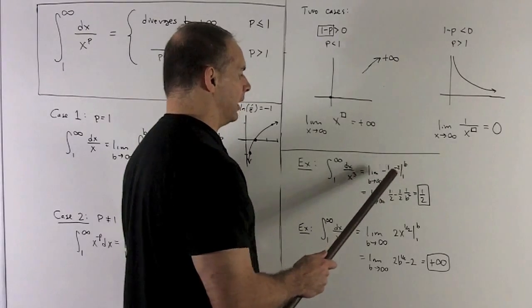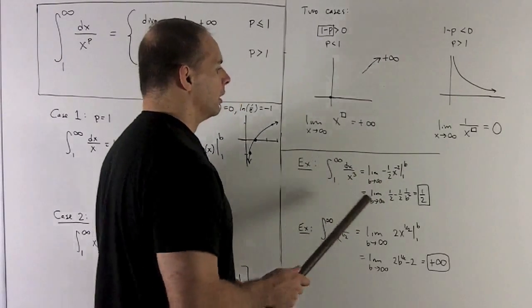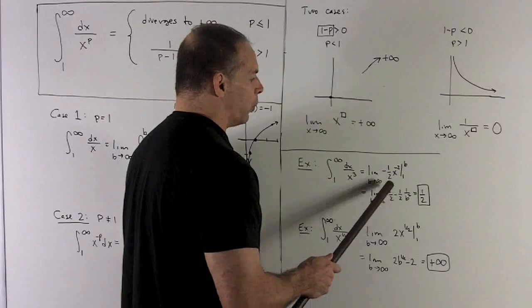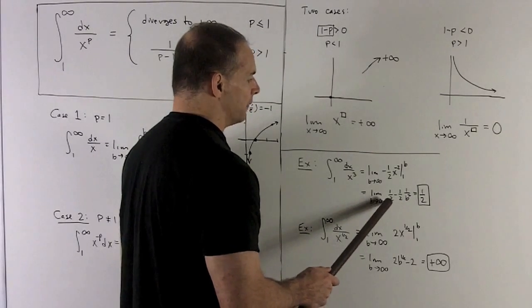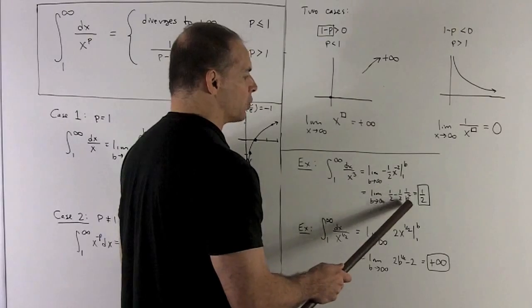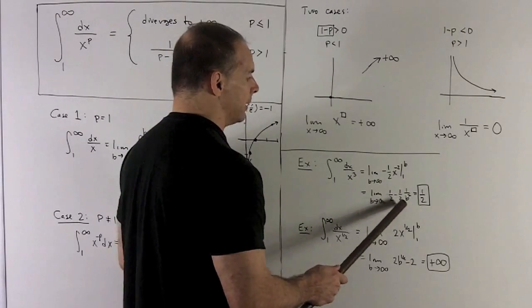And then we're going to go from 1 to b, limit of b going to infinity. We sort all this out. That's going to give me 1 half minus 1 half, 1 over b squared. As b goes to infinity, 1 over b squared is going to go to 0. So I'm going to be left with a 1 half.